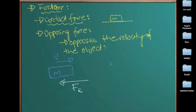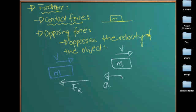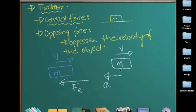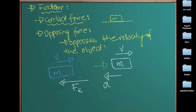Let's say this is a mass and its velocity is in this direction and its acceleration is in another direction. Many would get confused as to where the friction force would be acting. But always remember, the friction force does not care about the acceleration — it doesn't care whether the acceleration is in this direction or that direction. All it cares about is the velocity of the object. Since the velocity is in this direction, the friction force would be in the opposite direction, irrespective of the direction of the acceleration. The friction force opposes velocity, not acceleration.